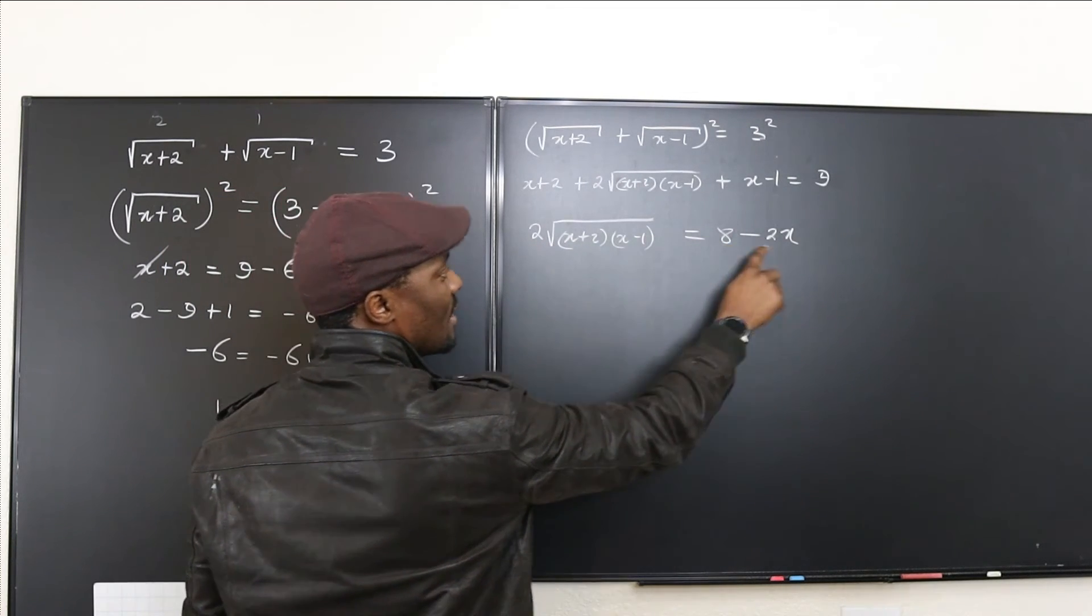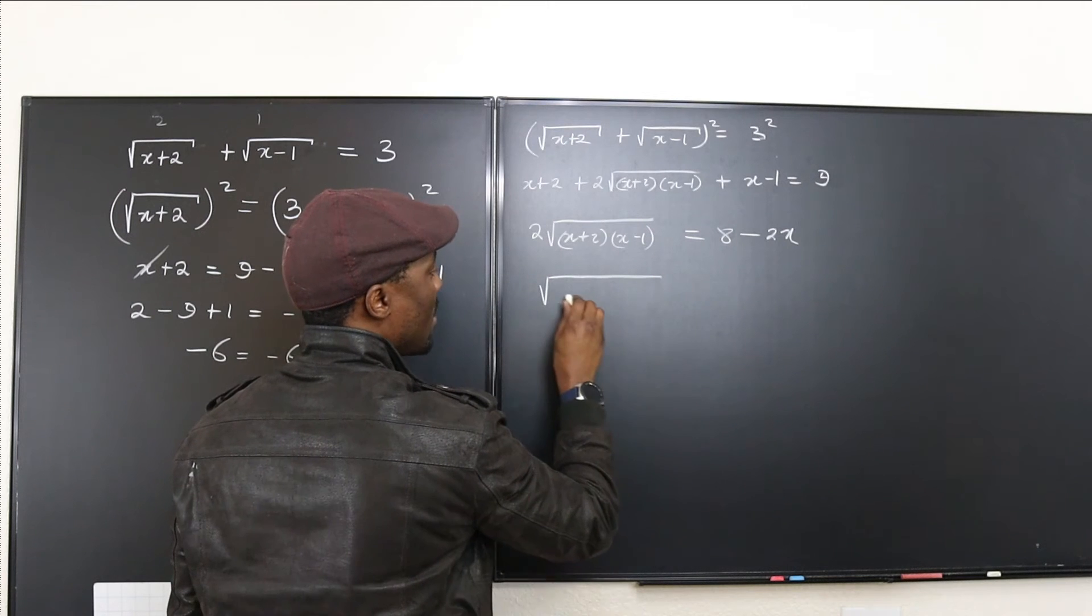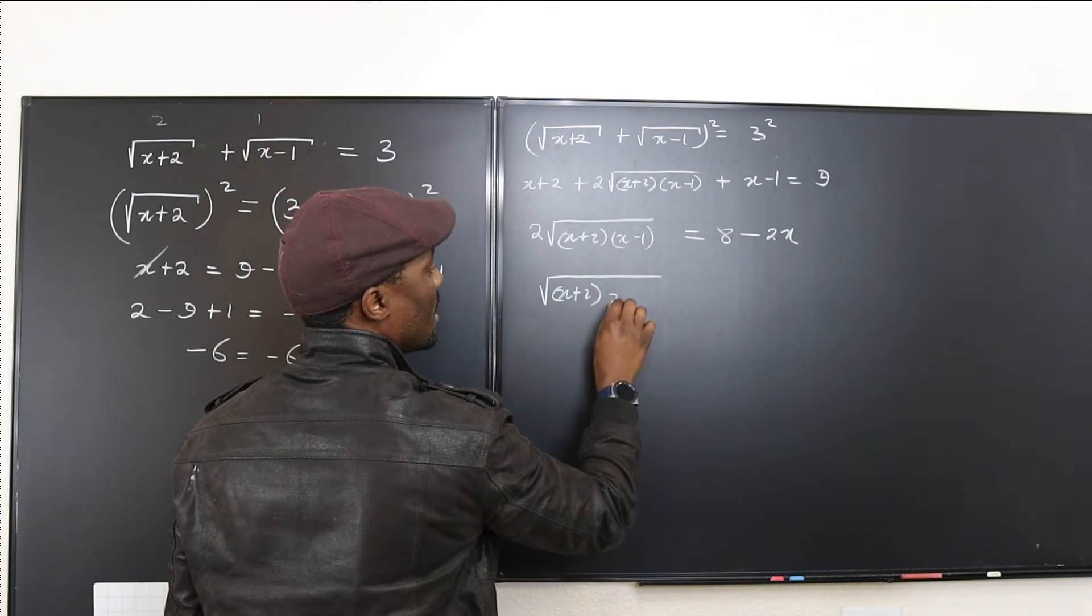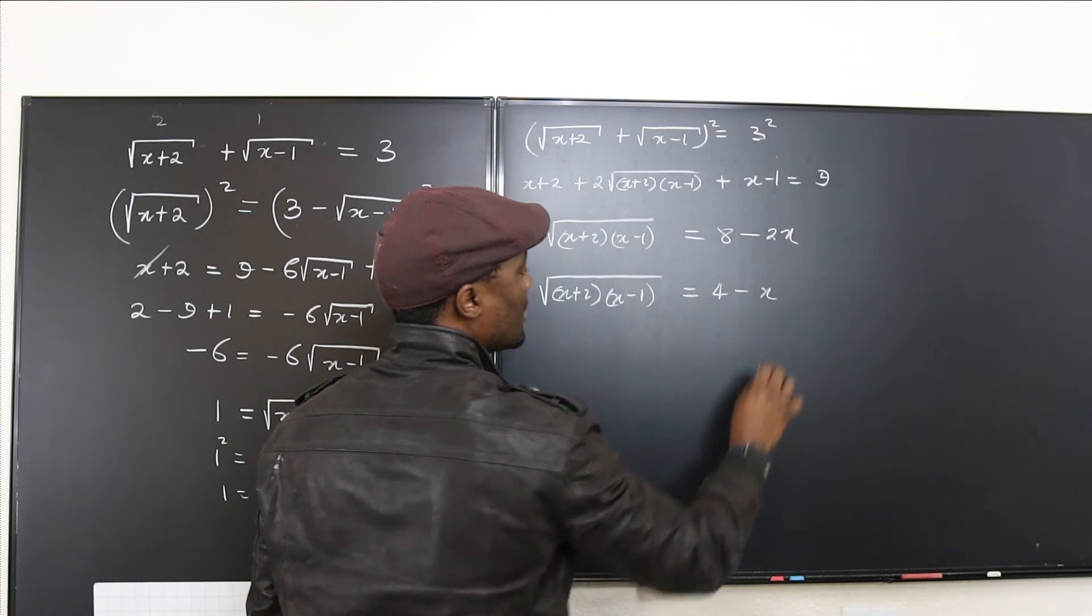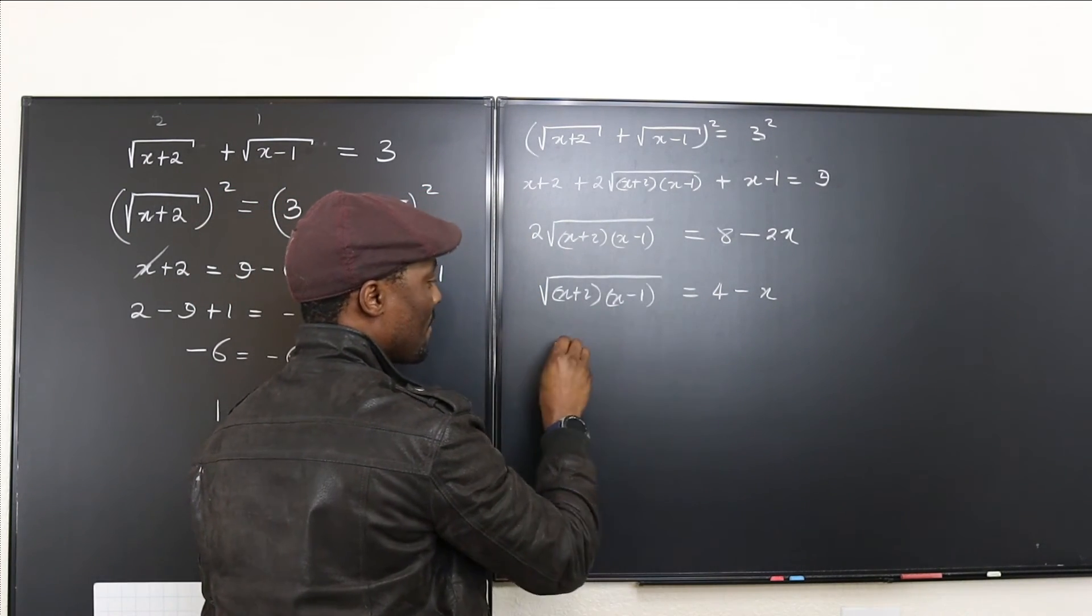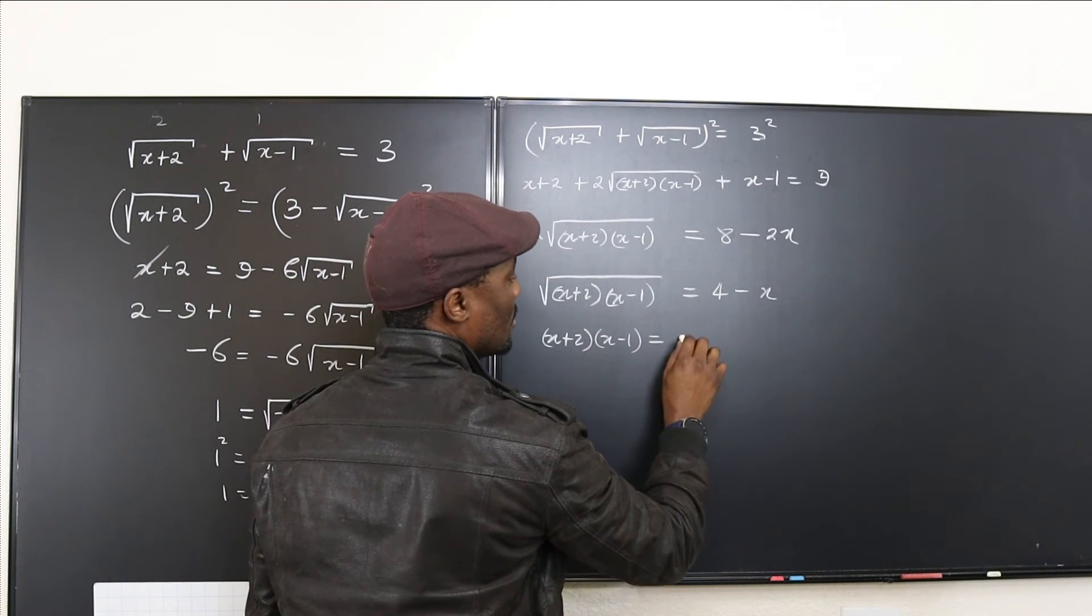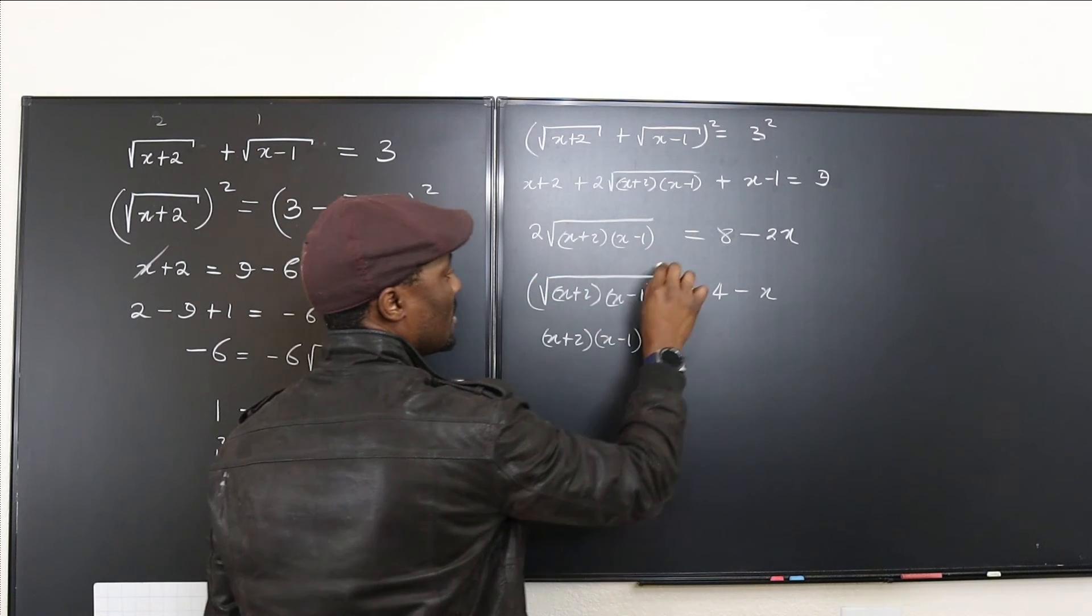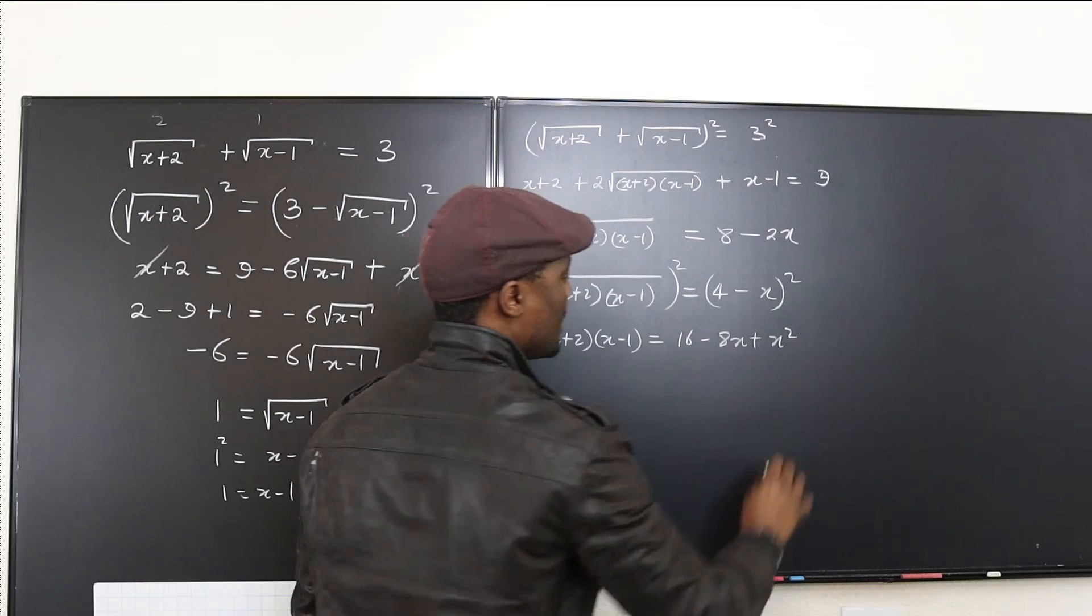So now we have 2 as a factor. 2 will divide everything here. So if you divide through by 2, you have radical x plus 2 x minus 1 will be equal to 4 minus x. So now we can confidently square both sides. You have x plus 2 x minus 1 is equal to, you square this, so this is going to be 16 minus 8x plus x squared.